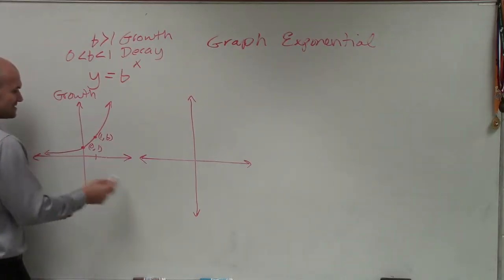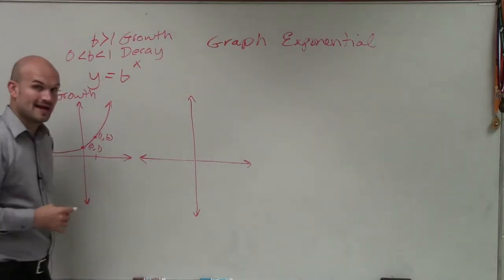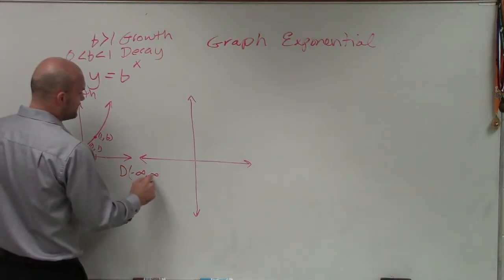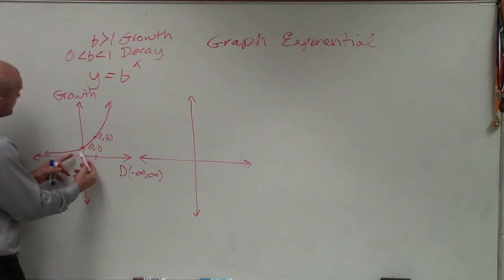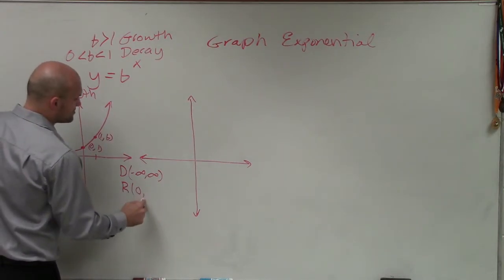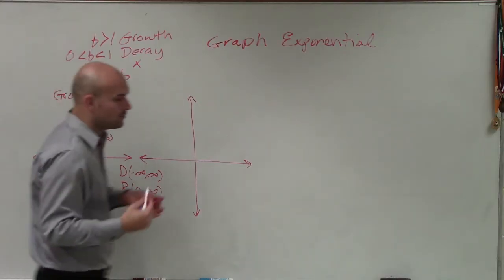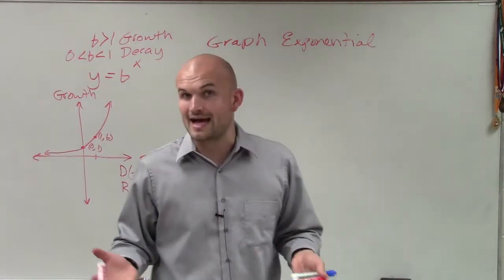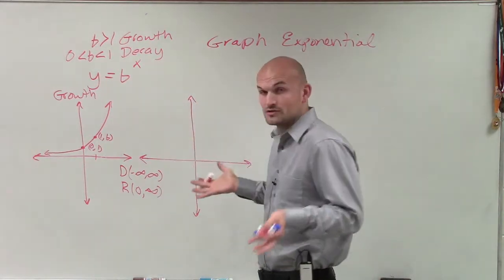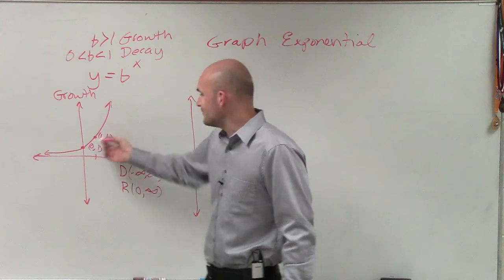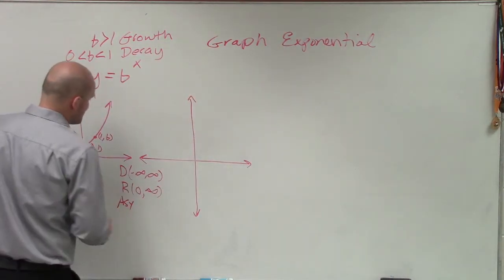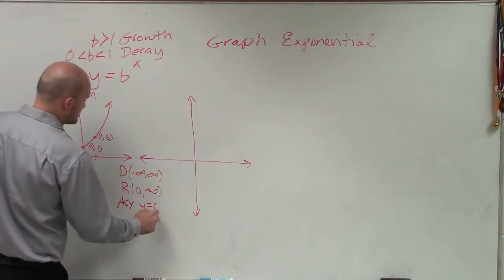Now let's talk about the asymptote — this applies to both growth and decay graphs. We're going to have a domain from negative infinity to infinity, as the x-values increase infinitely to the left and right. Our range is only from 0 to infinity, meaning the output value is never going to be negative. And our asymptote, where the graph approaches, is going to be at y = 0.